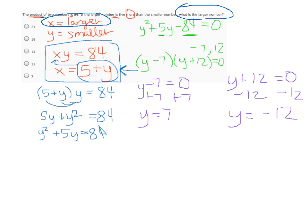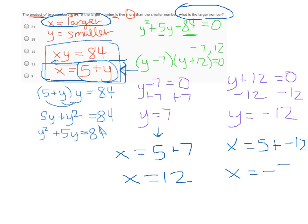We need to go one step farther and solve for what x would be. We want to plug it back into the second equation. If y equals 7, x equals 5 plus y, and in this case y was 7, so we have x equals 12. On the second one, if y is negative 12, we have x equals 5 plus negative 12, and so we have x equals negative 7.